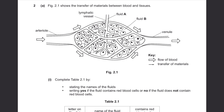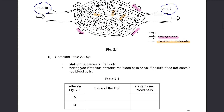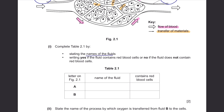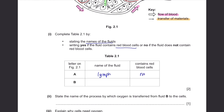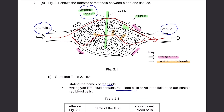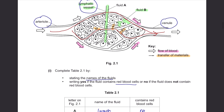Question 2, Part A. Figure 2.1 shows the transfer of materials between blood and tissues — blood flows from the arteriole towards the venule, with a lymphatic vessel and arrows showing flow and material transfer. Complete Table 2.1 by stating the names of the fluids and whether they contain red blood cells. Fluid A is in the lymphatic vessel — it's called lymph, and it does not contain red blood cells, as red blood cells always stay inside blood vessels. Fluid B indicates the tissue area — it's tissue fluid and also does not contain any red blood cells, as it is not inside a blood vessel.